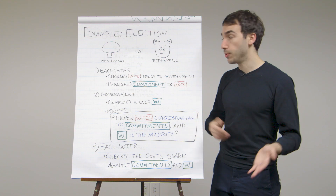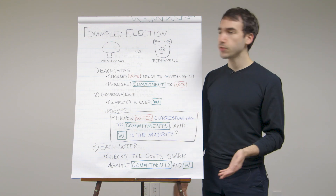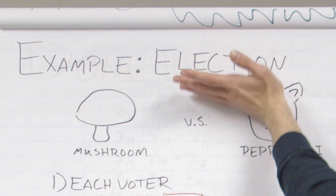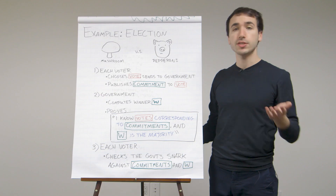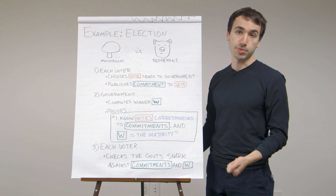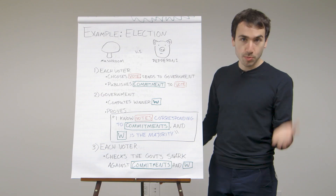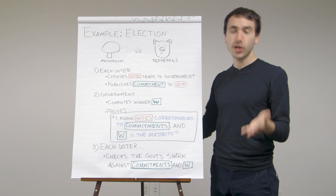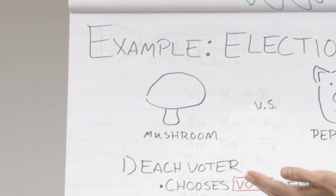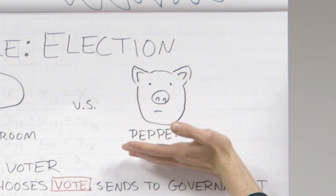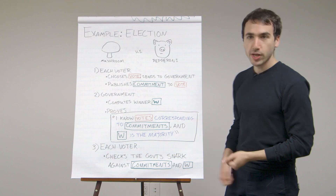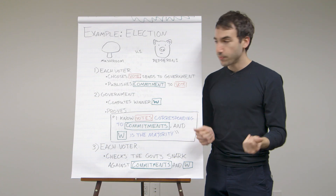To see how SNARKs might help us with verifiable computation, let's go back to the verifiable election example. Imagine you and your friends get together and it's pizza time. There's an important question: what kind of pizza are we going to get? Some of us like mushroom, others might like pepperoni. So we have to vote on what kind of pizza we're going to get.